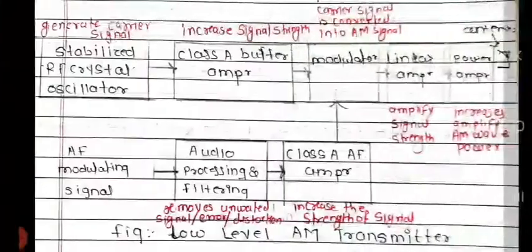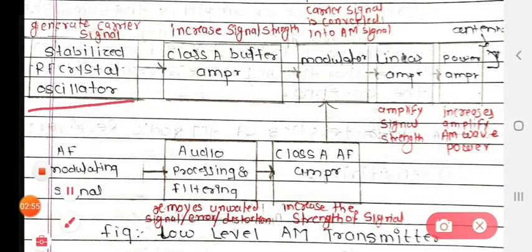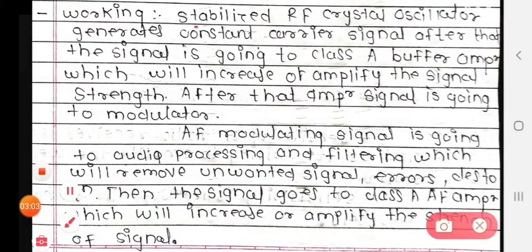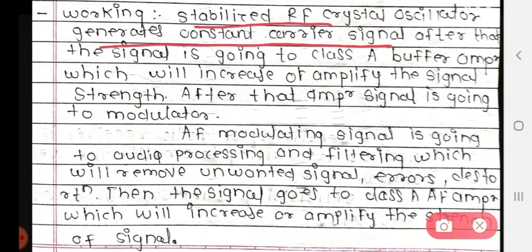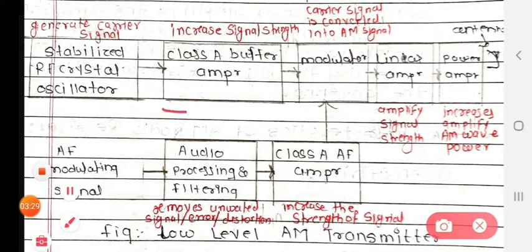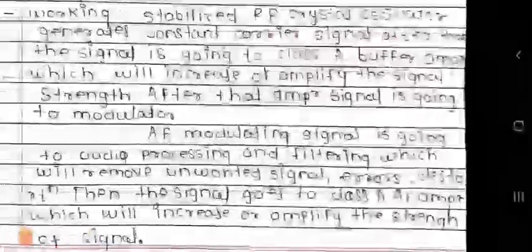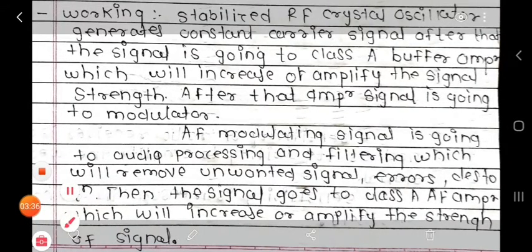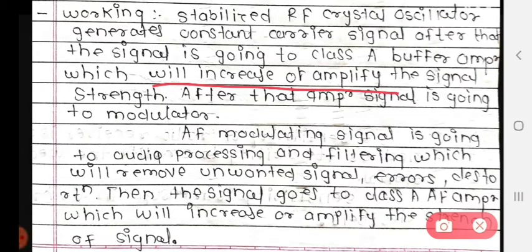The first block is the stabilized RF crystal oscillator and the second is the class A buffer amplifier. The RF crystal oscillator generates a constant carrier signal. After that, the signal goes to the class A buffer amplifier, which will increase the signal strength. After that, the amplified signal goes to the modulator.